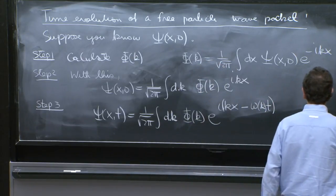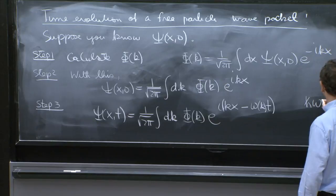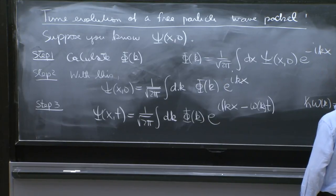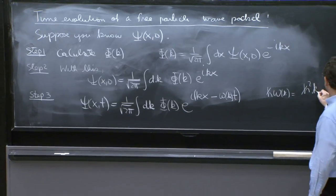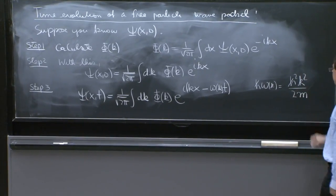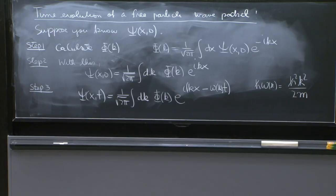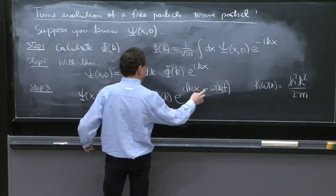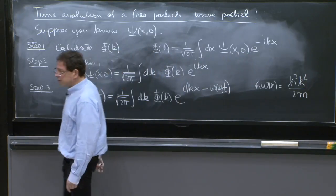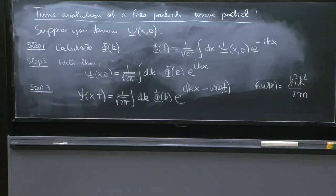And I remind you that ℏω(k) is the energy and it's equal to ℏ²k² over 2m. This is our free particle. And I claim that just by writing this, I've solved the Schrödinger equation and I've time evolved everything.